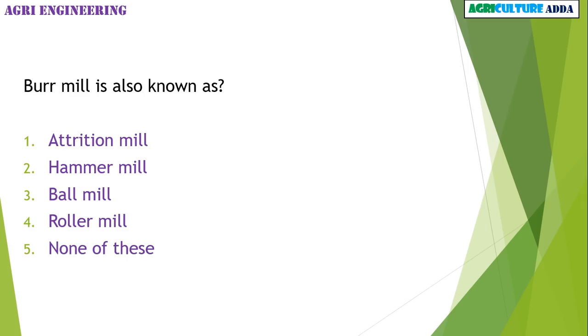Burr mill is also known as — attrition mill, hammer mill, ball mill, roller mill, or none of these? The answer is attrition mill.